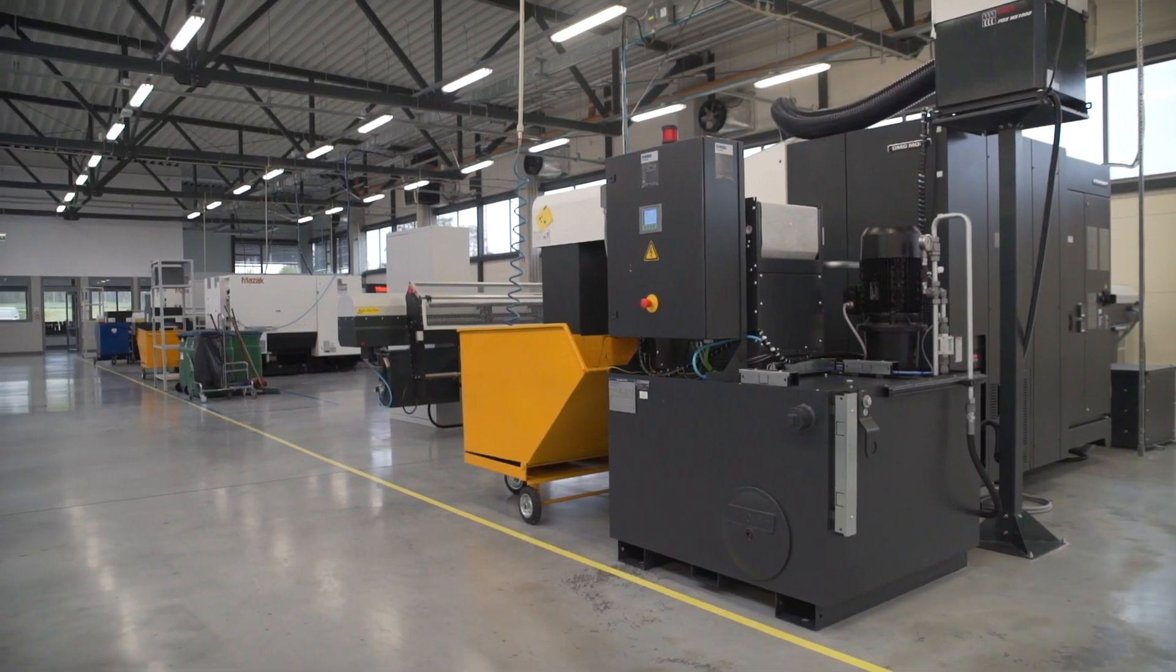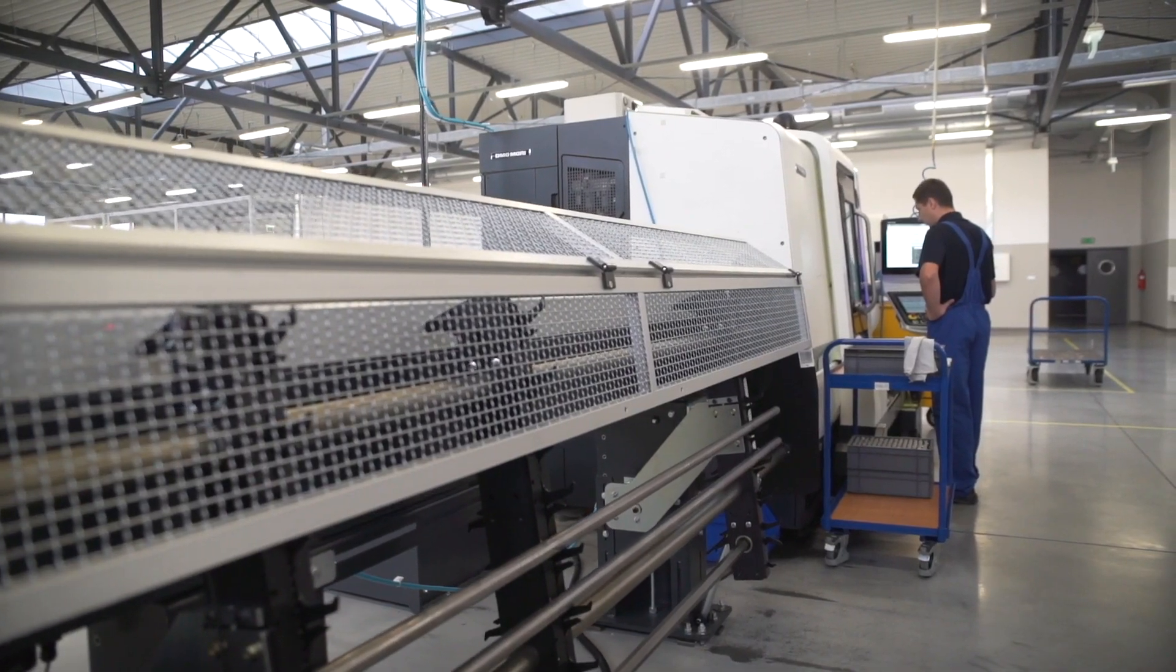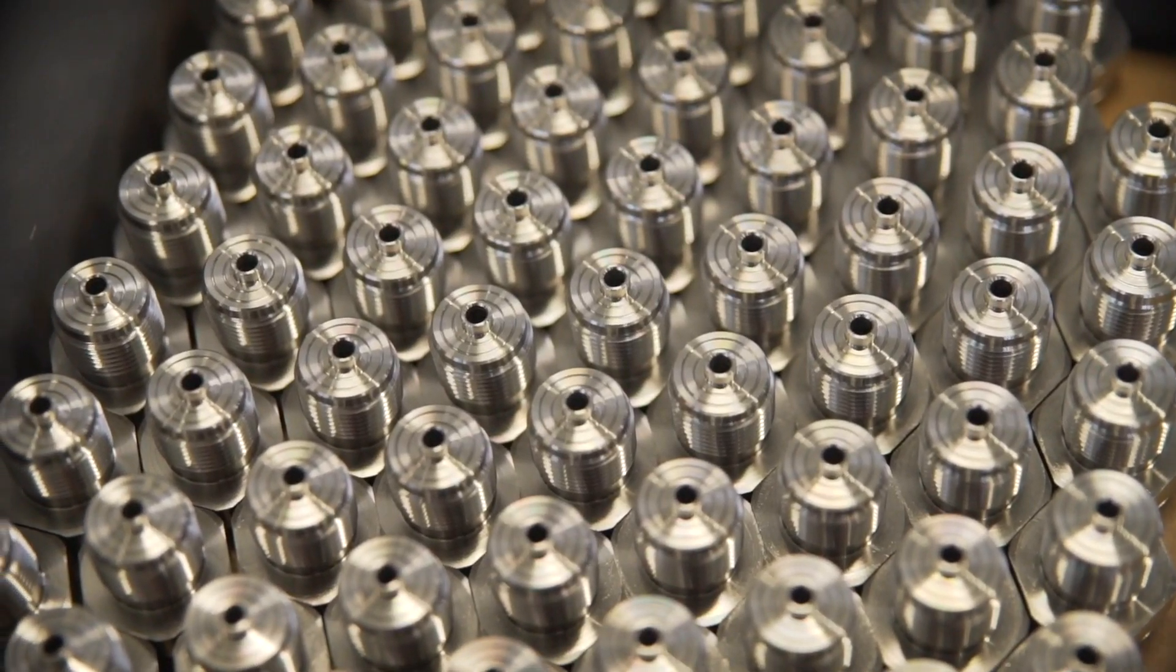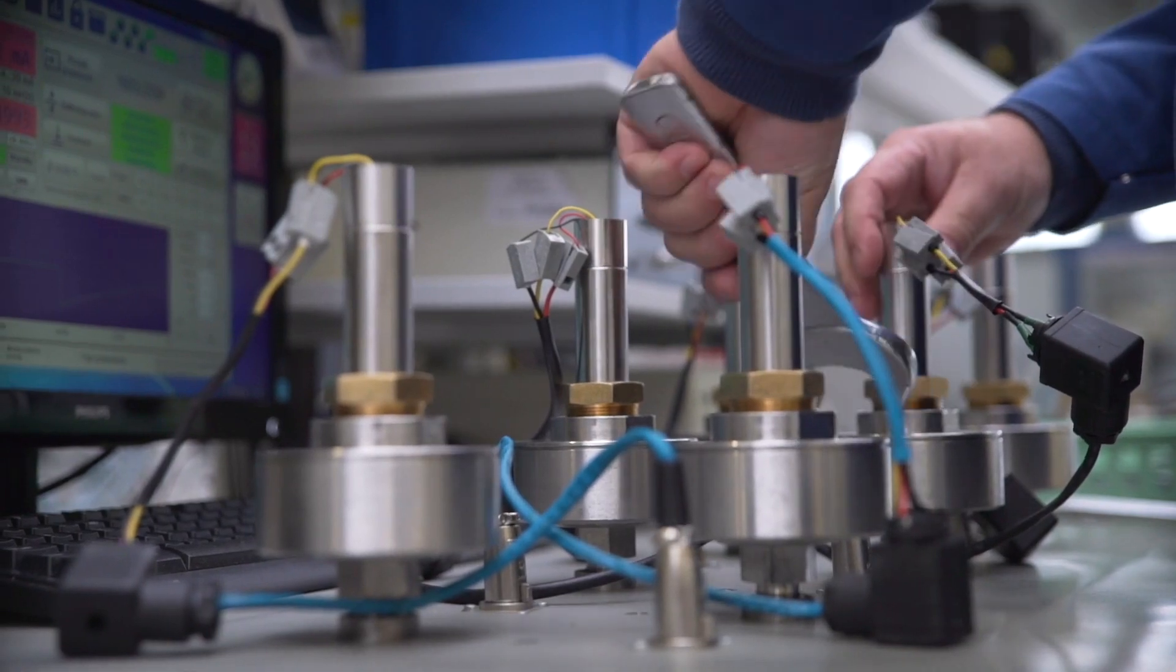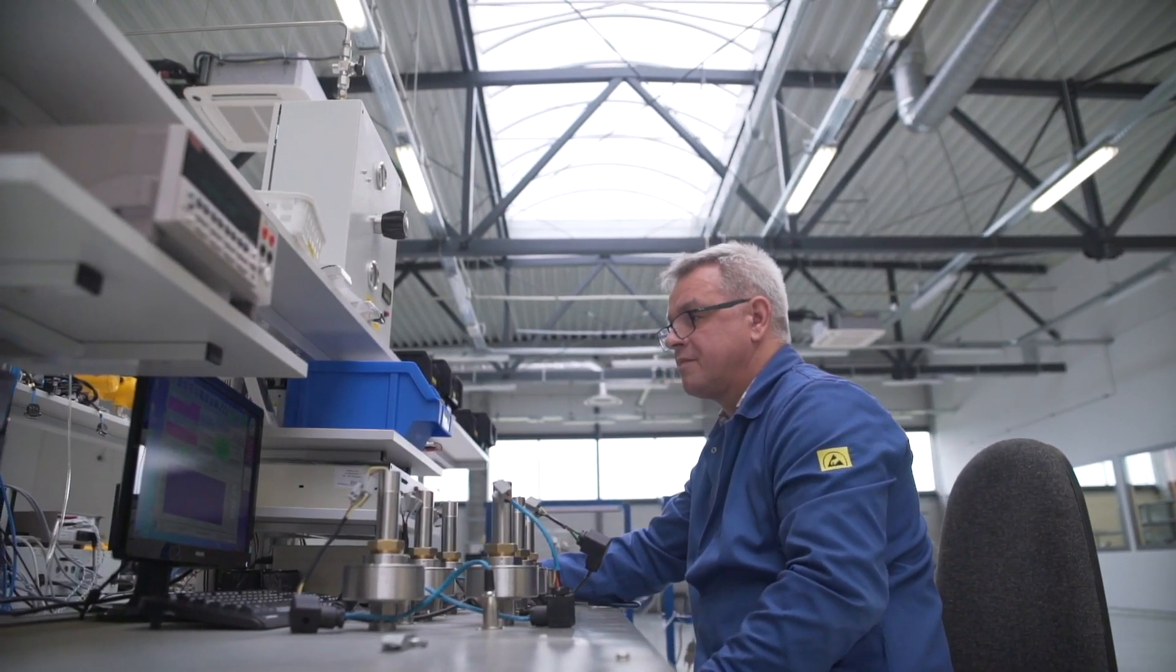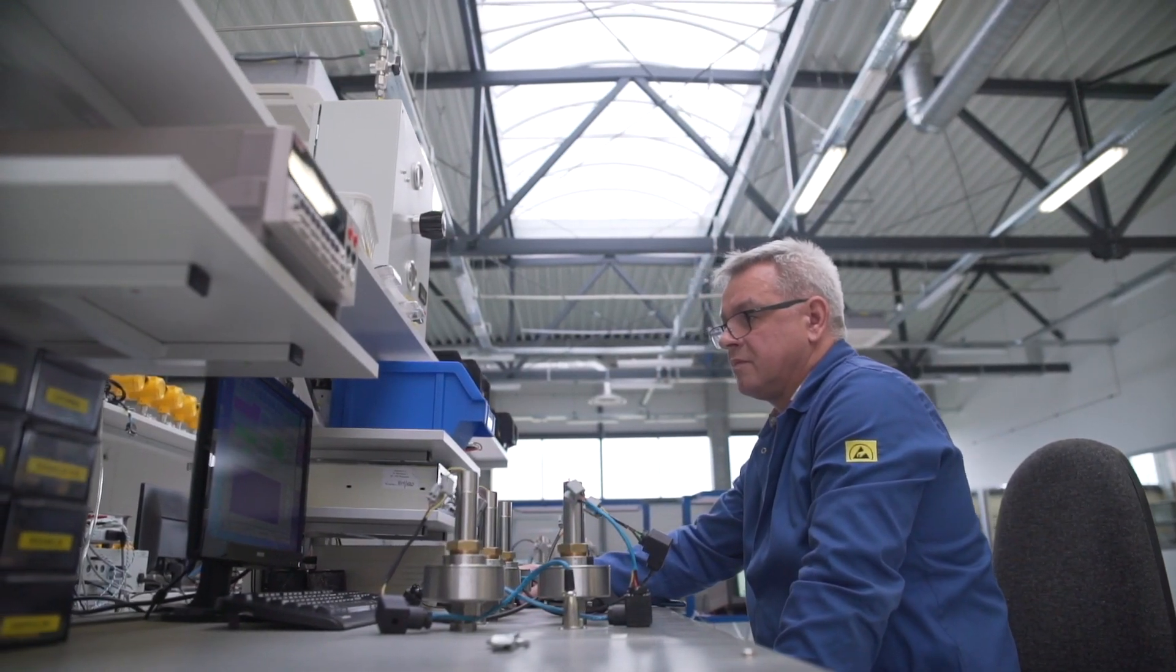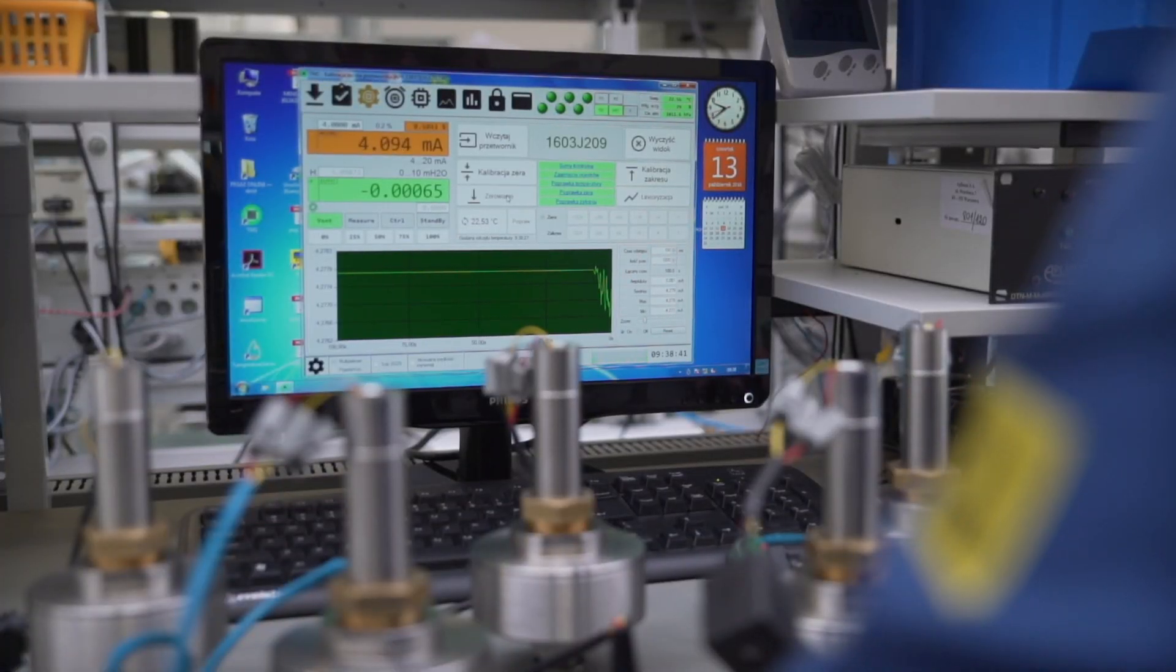Work on a transmitter begins with the production of process connections for the pressure sensor. It is the part of a device which has direct contact with the medium. The function of the sensor is to convert pressure into an electrical signal.